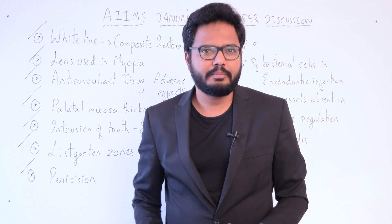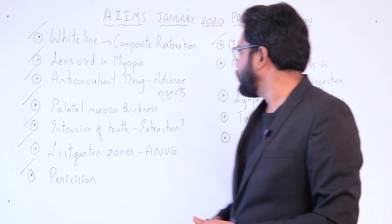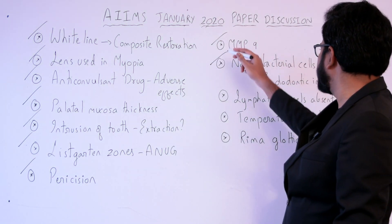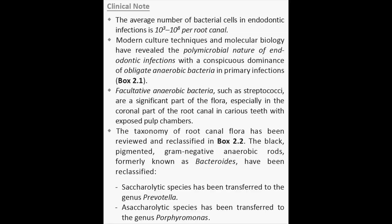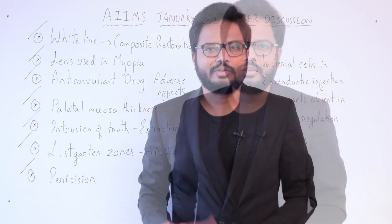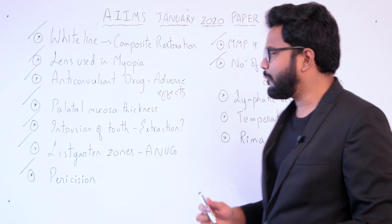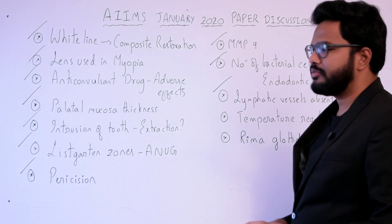The number of bacterial cells in endodontic infection: the average number of bacterial cells estimated in an endodontic infection is around 10³ to 10⁸ per root canal.